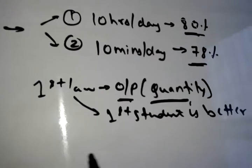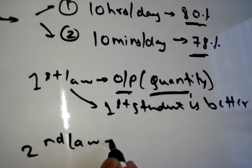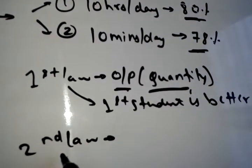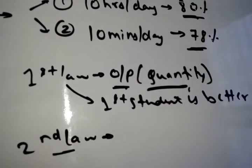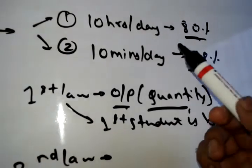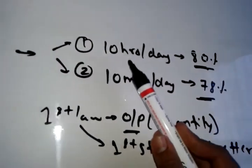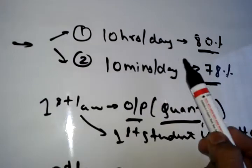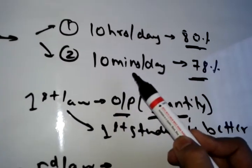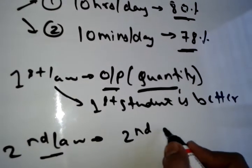Now if you see the second law, it also considers quality. The first student uses 10 hours per day and gets 80%, while the second student does only 10 minutes per day and gets 78%. So according to the second law, the second student is better.